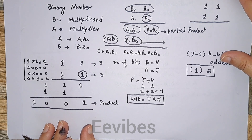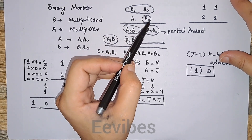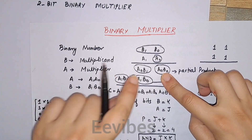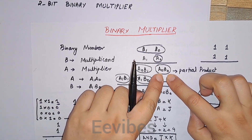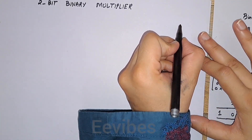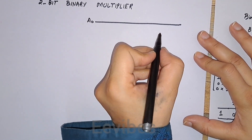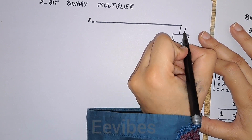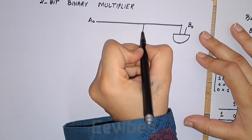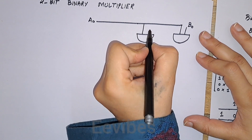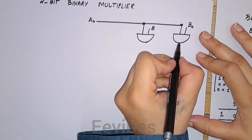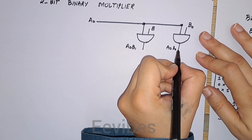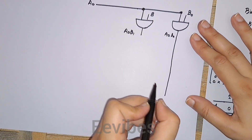Now let's design the circuit. We AND each bit of the multiplicand with a0 to obtain the first partial product. We have a single wire representing a0, and we feed in each bit of the multiplicand: b0 and b1. This gives us a0·b1 and a0·b0. Since a0·b0 is not added anywhere, it comes down as is and gives us the first bit of the resulting product.